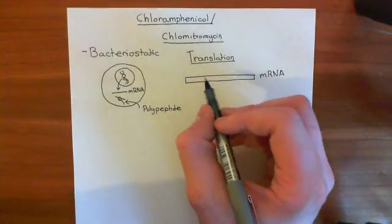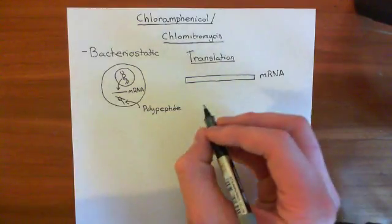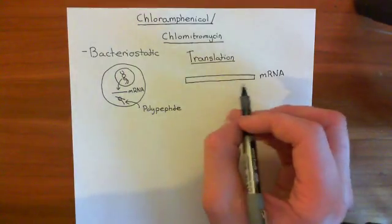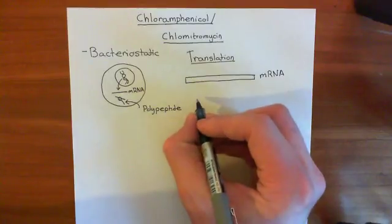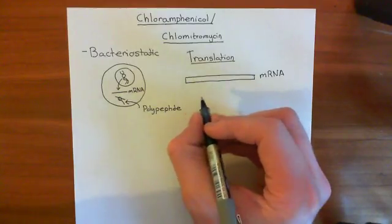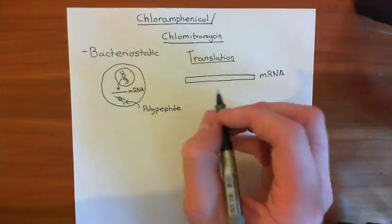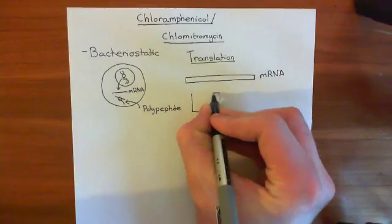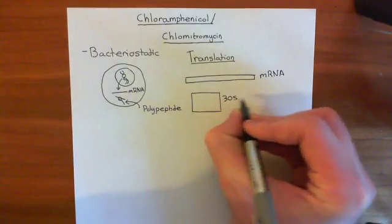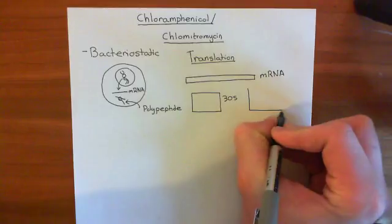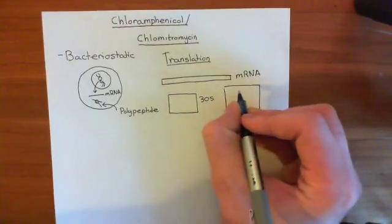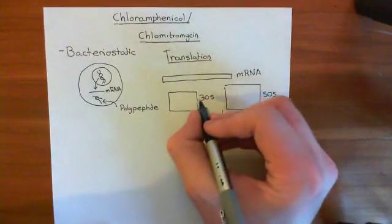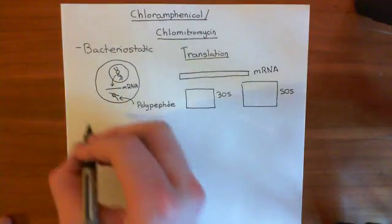Of course, mRNA has the organic base uracil rather than thymine. For translation to begin, the mRNA strand needs to assemble with the ribosome. In bacteria, the ribosome is constructed out of two portions: a 30S portion and a bigger 50S portion. First, you assemble the mRNA with the 30S subunit.